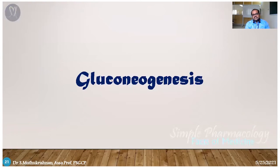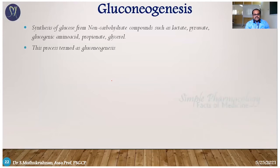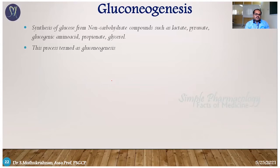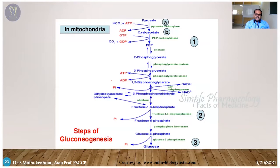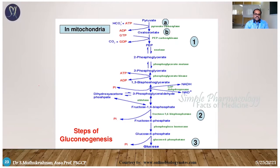The next pathway is gluconeogenesis — formation of glucose from non-carbohydrate material. The non-carbohydrate material may be lactate, pyruvate, glycerol, propionate, or some amino acids. It mostly occurs in the liver, particularly in the cytosolic and mitochondrial regions. Starting with pyruvate: it is converted into oxaloacetate and finally into glucose. This pathway is simply the reverse of the glycolysis cycle — in glycolysis glucose is converted to pyruvate; in gluconeogenesis, pyruvate is converted to glucose.